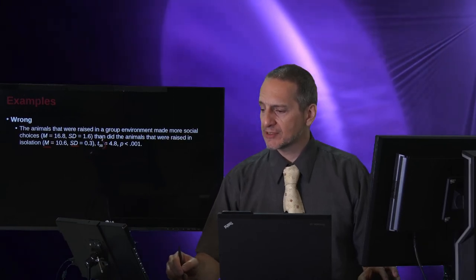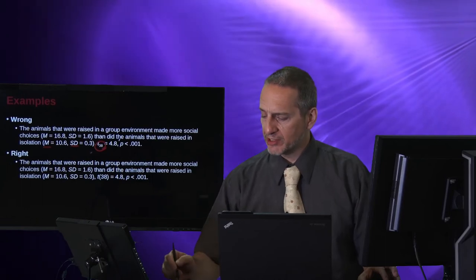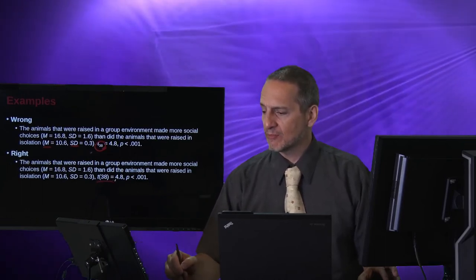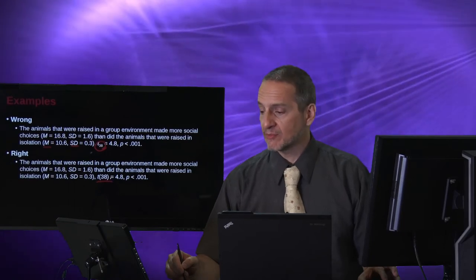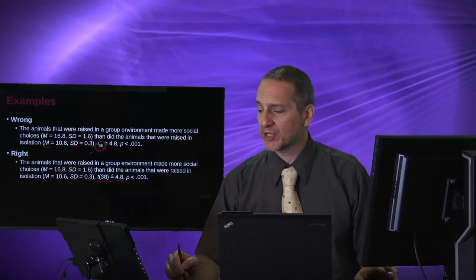But here what we have is this subscript for the t-test, which the correct way to write that would be t parentheses 38, meaning the degrees of freedom related to the sample size. So here's the t-test. So if I want to look it up in a table, that's 38. But you don't use a subscript.